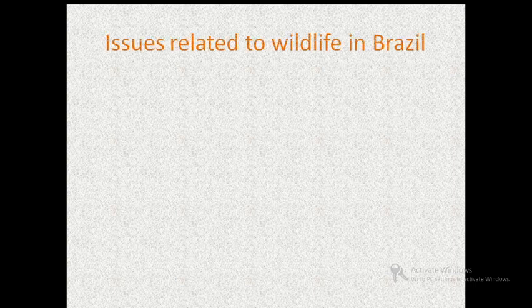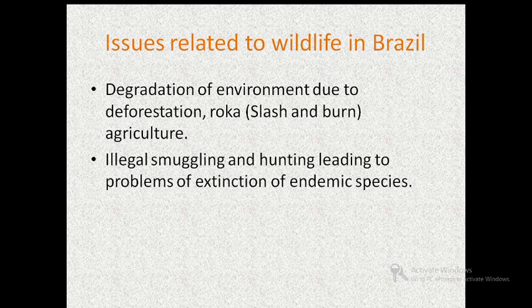Issues related to wildlife in Brazil: The land under forest is cleared by cutting and burning, and on the same patch of land subsistence type of agriculture is followed for the next few years. Illegal smuggling and hunting of animals is also leading to the problem of extinction of endemic species. Endemic means native and restricted to a certain place. So the species found in Brazil are on the verge of getting extinct.